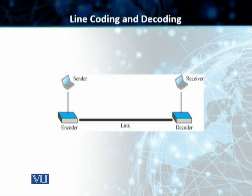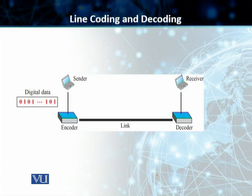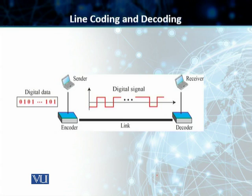In the figure, what you can see is that we have got a data communication system, which consists of a sender hooked up to an encoder. There is a link between the encoder and the decoder, and then we have got a receiver of the information. It's digital data which needs to be sent over this link using a digital signal. On the sending end, this digital data is encoded using the encoder, and then the resulting digital signal is sent over the link. At the receiving end, this digital signal is decoded and converted back to digital data and handed over to the receiver.